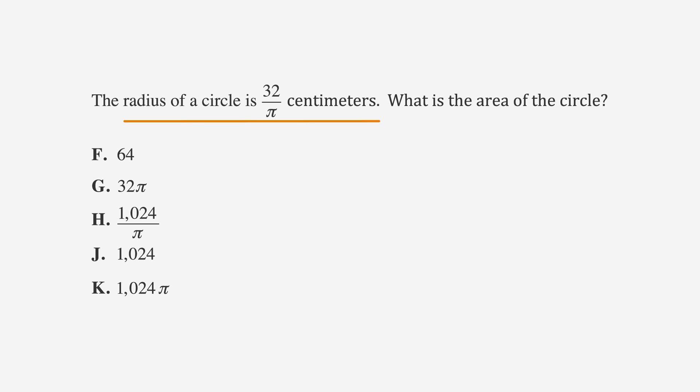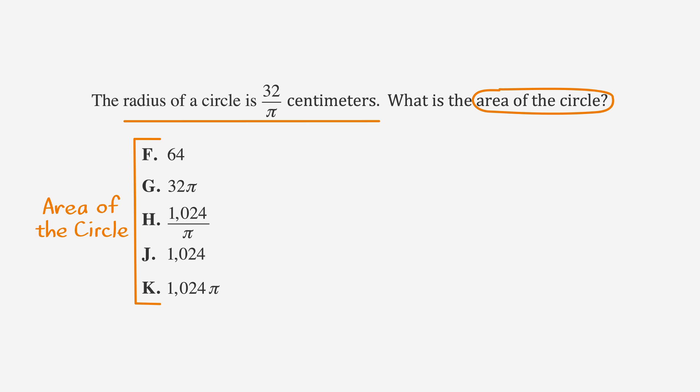We'll start by underlining our facts, circling our keywords, and labeling those answer choices. As they didn't give us a picture, draw a picture of a circle and label the radius 32 over pi.